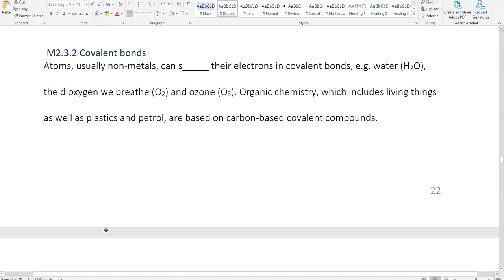Covalent bonds. Atoms, usually non-metals, can share their electrons in covalent bonds. For example, H2O water, the dioxygen we breathe O2, and the ozone in the outer atmosphere O3. Organic chemistry, which includes all living things, as well as plastics and petrol, are based on carbon-based covalent compounds. It's interesting because the word organic has a different meaning when we talk about food. If you eat an organic banana, all bananas are organic, the same way that all petrol is organic, or all plastic is organic.